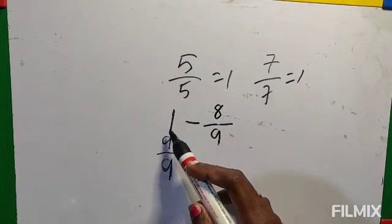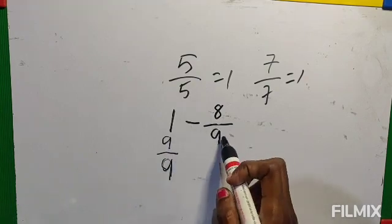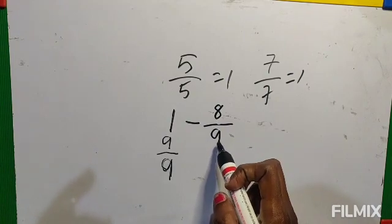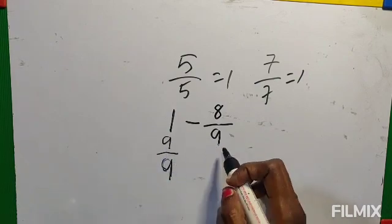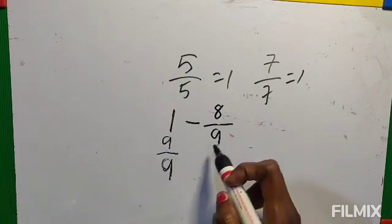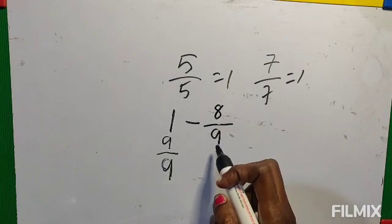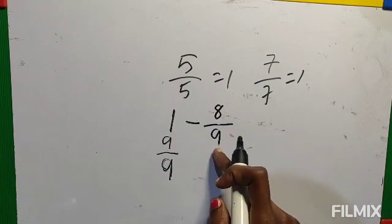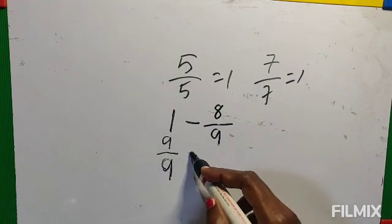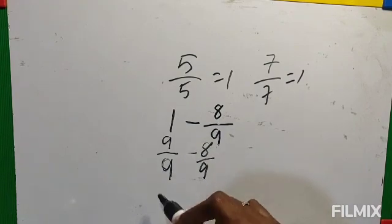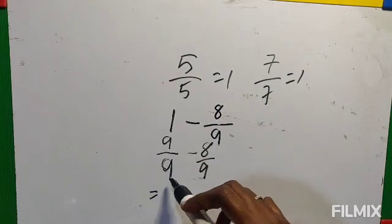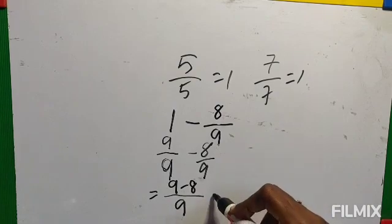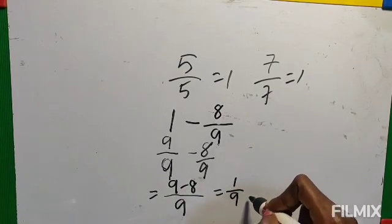So if 1 is given, look at the other fraction's denominator — whatever that denominator is, write that same number as both the numerator and denominator. If the denominator is 15, write 15 by 15; if 2, write 2 by 2; if 100, write 100 by 100. Now write 8 by 9 as it is. Take the common denominator 9, write the numerators: 9 minus 8 equals 1. The answer is 1 by 9.